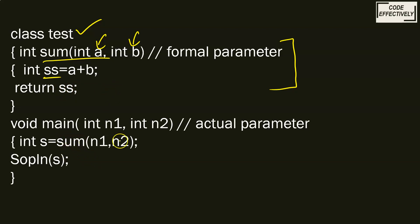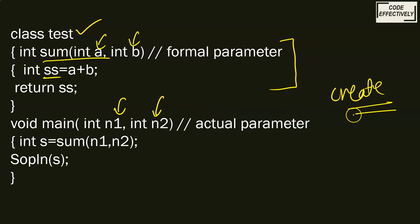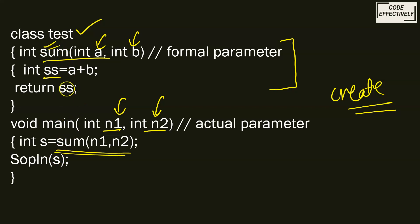After this, I have created the void main, and in void main we have parameterized input. When we create the object, the object will ask us for the values. We will input the values n1 and n2, and these values will be passed into the function as sum(n1, n2). Whatever value sum returns — that is, it will return ss — that ss value will be stored in s, and we will simply display the sum of the numbers.